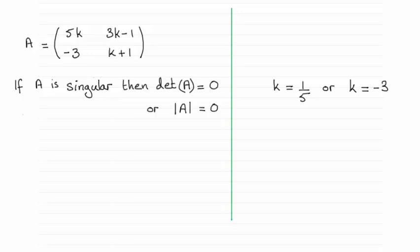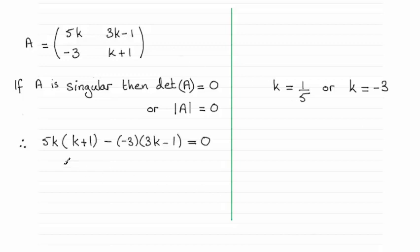Remember that we can use this notation — the determinant of A equals 0 — or you could put it within these two straight lines, A equals 0. To work out a determinant, remember you do the product of the two elements on the leading diagonal, and then you subtract the product of the two elements on the trailing diagonal. So we would have 5k times k plus 1, minus minus 3 times 3k minus 1, and that equals 0.